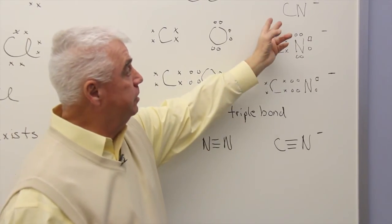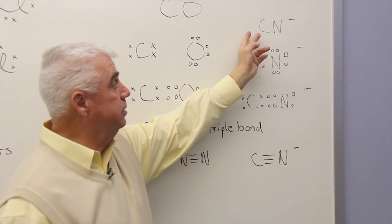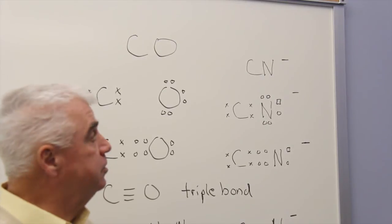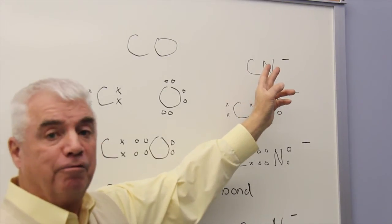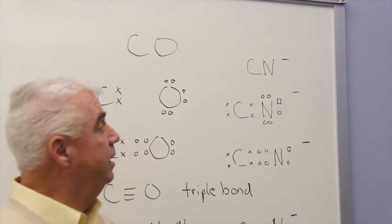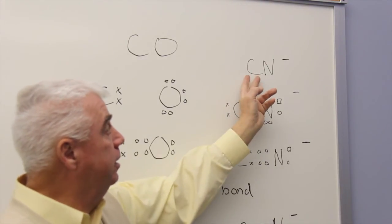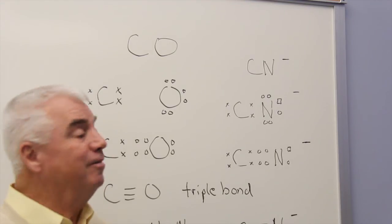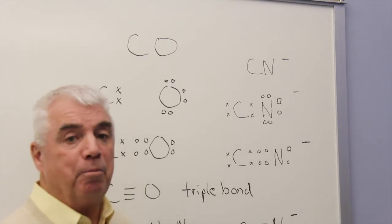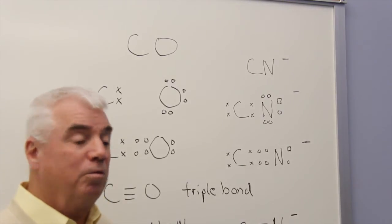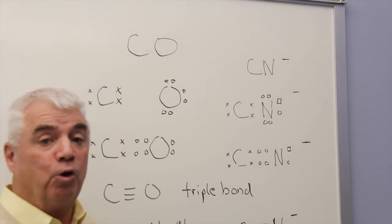Let's look at the cyanide ion, CN-. That negative charge up there means that it's obtained an electron from somewhere. Maybe there's a metal around, like sodium, that gave up its electron so that CN could have a minus charge. Well, chances are, if CN with a minus charge exists, it satisfies the octet rule. Let's see if we can come up with the Lewis structure.